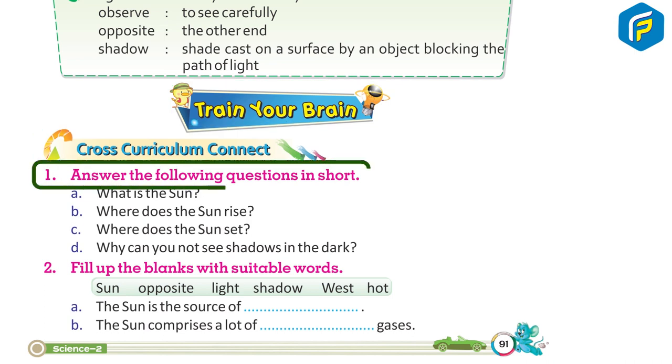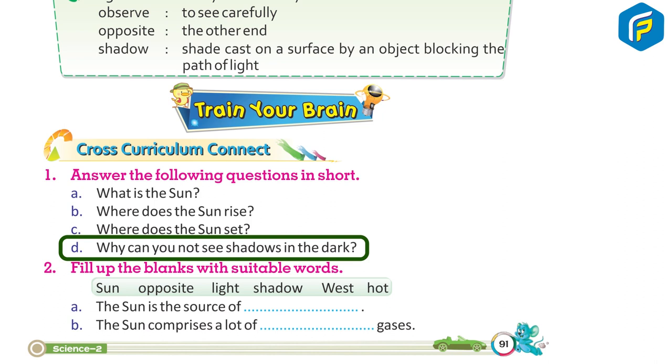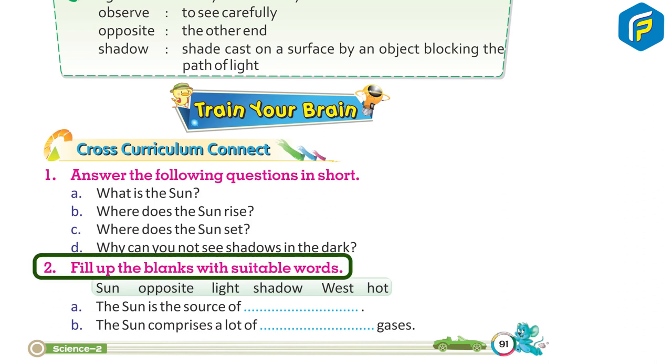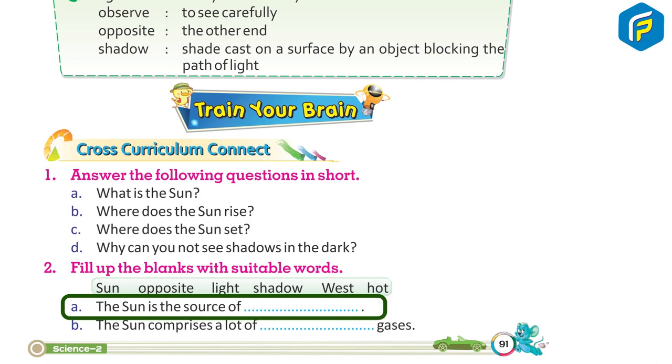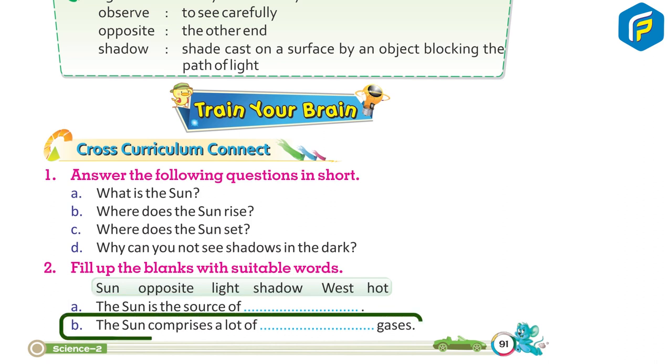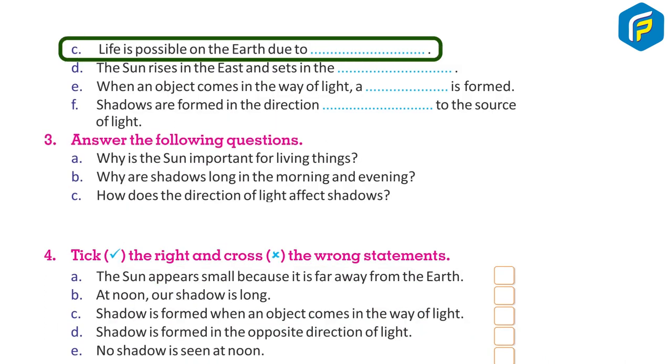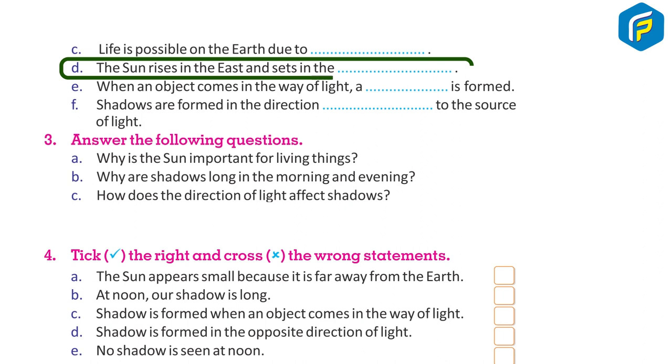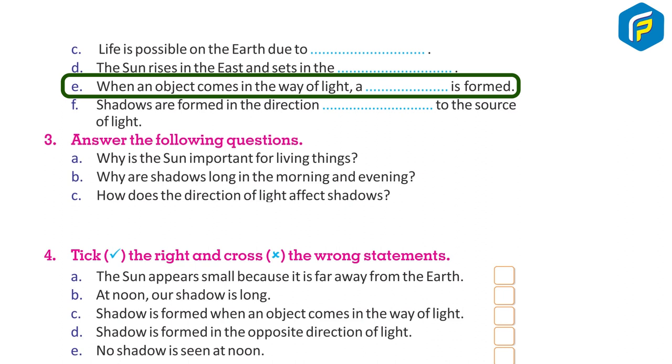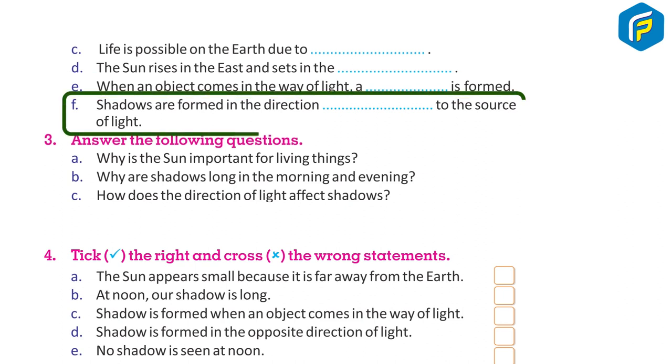Train your brain. Cross-curriculum connect. 1. Answer the following questions in short: a) What is the Sun? b) Where does the Sun rise? c) Where does the Sun set? d) Why can you not see shadows in the dark? 2. Fill up the blanks with suitable words: a) The Sun is the source of blank. b) The Sun comprises a lot of blank gases. c) Life is possible on the Earth due to blank. d) The Sun rises in the east and sets in the blank. e) When an object comes in the way of light, a blank is formed. f) Shadows are formed in the direction blank to the source of light.